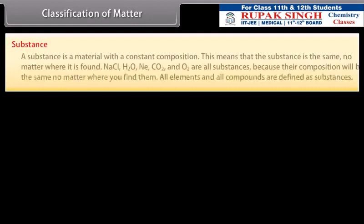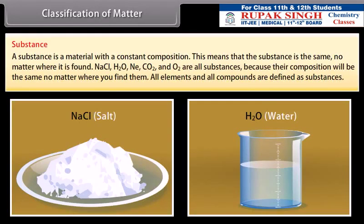A substance is a material with a constant composition. This means that the substance is the same no matter where it is found. NaCl, H2O, Ne, CO2 and O2 are all substances because their composition will be the same no matter where you find them. All elements and all compounds are defined as substances.